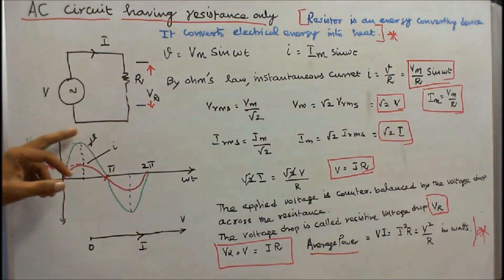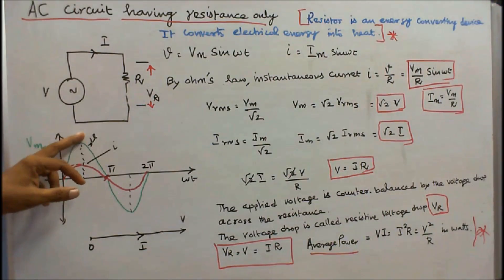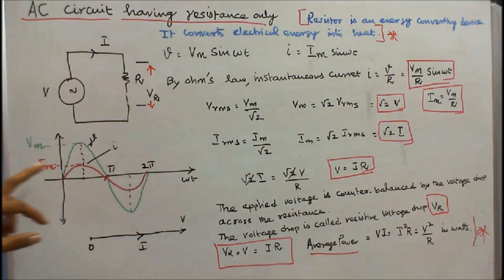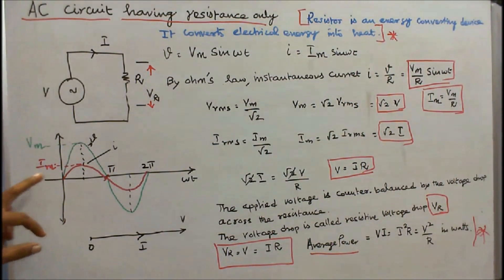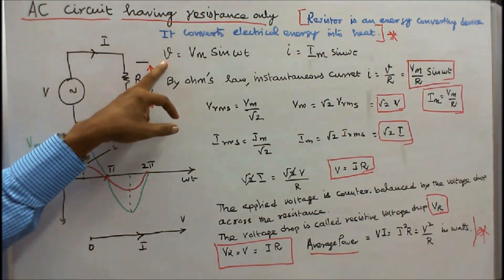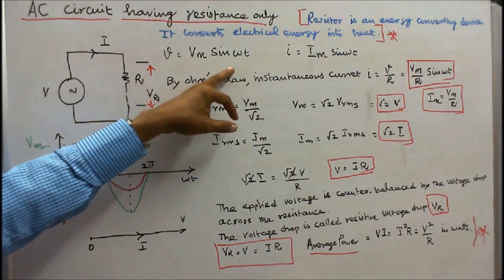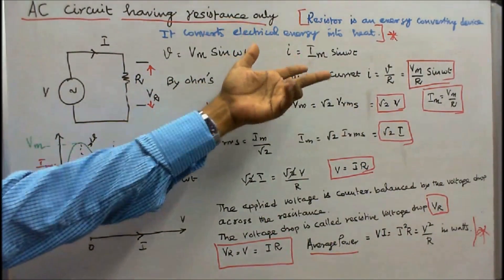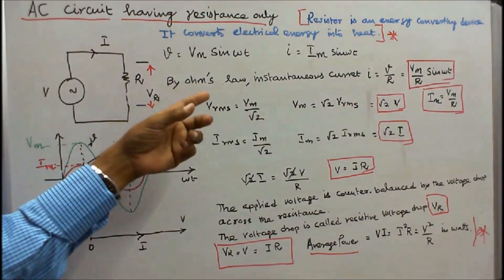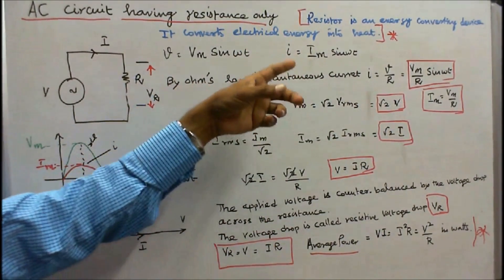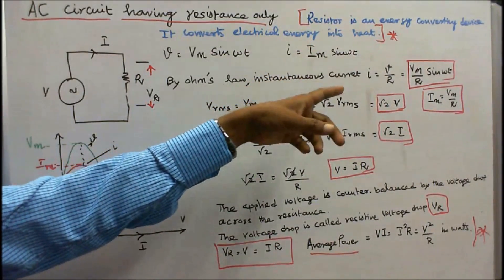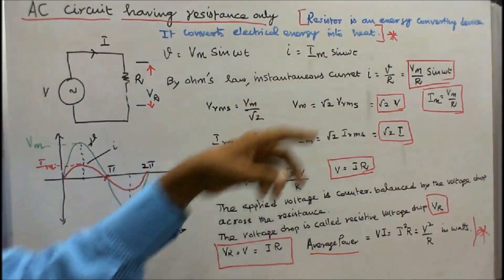Here small v is instantaneous voltage and small i is instantaneous current. Vm is maximum voltage and Im is maximum current. I can write: instantaneous voltage v is equal to Vm sin(ωt). By Ohm's law, instantaneous current i equals instantaneous voltage divided by resistance, that is equal to Vm/R × sin(ωt).